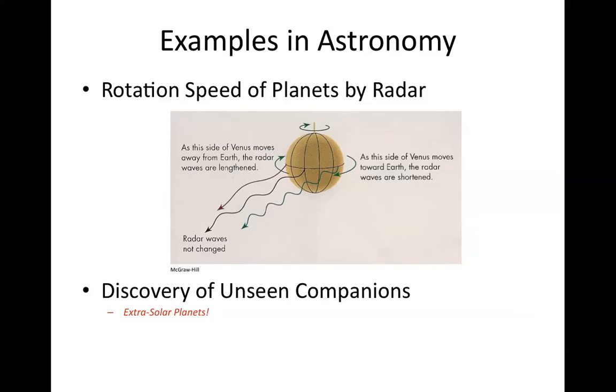Another example is in seeing rotation speed of planets by radar. If you send a signal with just one frequency out, because part of the planet is going away and part of the planet is coming towards as it rotates, that signal will be broadened in frequency coming back because some has shifted to longer wavelengths and some has shifted to shorter wavelengths because it's bouncing off pieces of the planet that are receding or approaching.